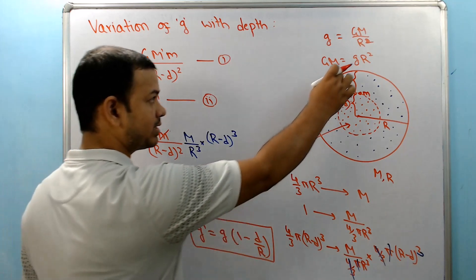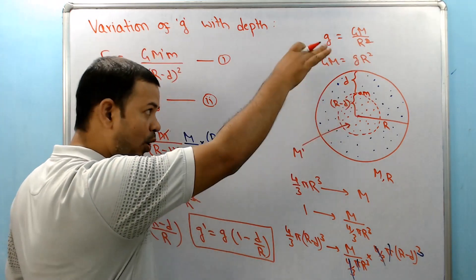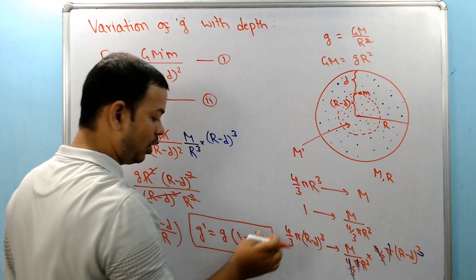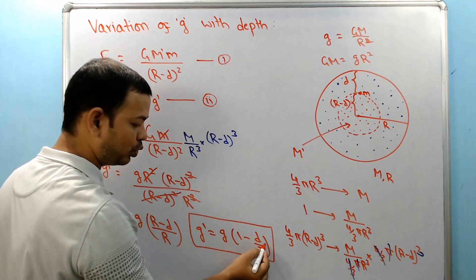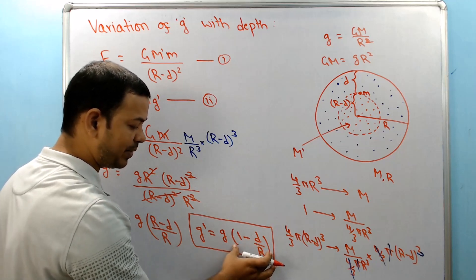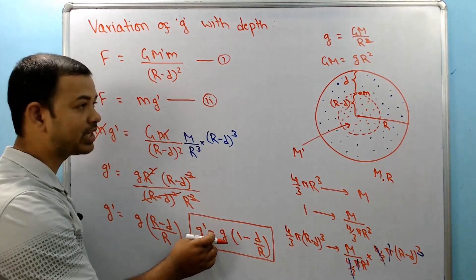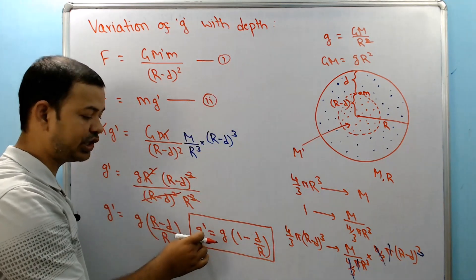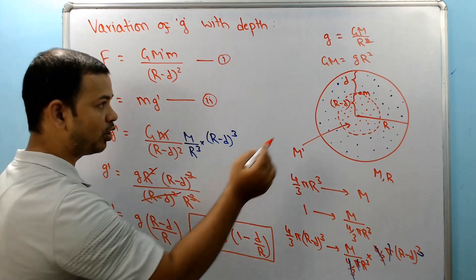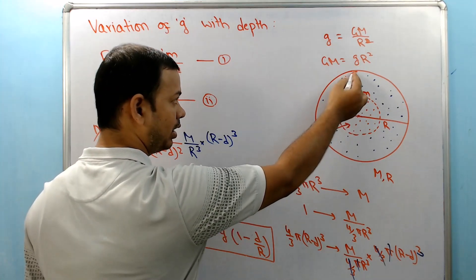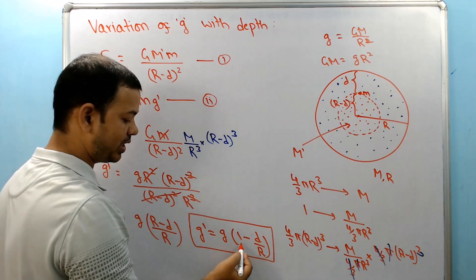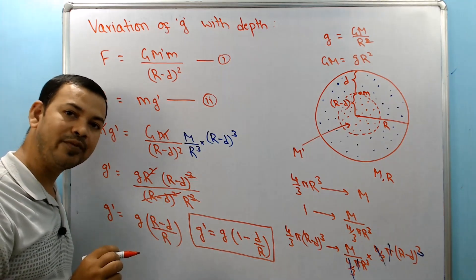From the formula g' = g(1 - d/R), as d increases — meaning as you go deeper from the surface of the earth — the bracket (1 - d/R) decreases, so g' will decrease. Acceleration due to gravity decreases as you go deeper. And as we reach the center of the earth, d becomes equal to R, so d/R equals 1, making g' equal to zero. At the center of the earth, acceleration due to gravity is zero.